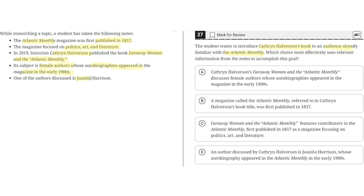One of the authors discussed is Juanita Harrison. Option A says: Catherine Haverson's Far Away Woman and The Atlantic Monthly discusses female authors whose autobiographies appeared in the magazine in the early 1900s. This seems to be correct because it introduces Catherine Haverson's book, Far Away Woman and The Atlantic Monthly, and it already emphasizes that this is to an audience familiar with The Atlantic Monthly by not providing extra background information about the magazine and simply referring to it as 'the magazine.' So A seems to be a correct answer.